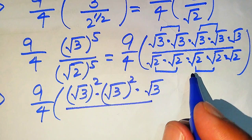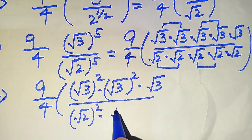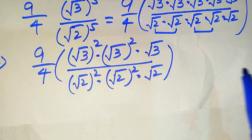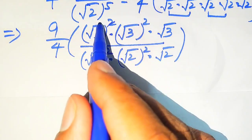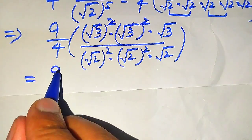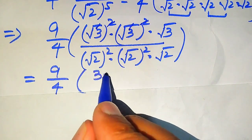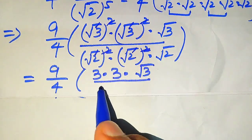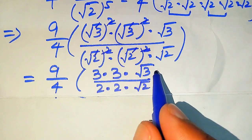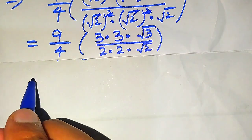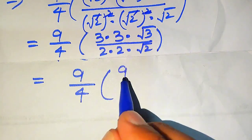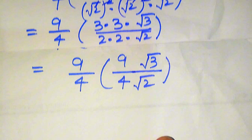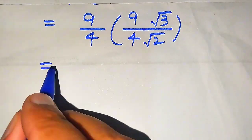Following the same pattern we write the denominator terms as (√2)² × (√2)² × √2. After that, the square and square root cancel: each (√3)² becomes 3 and each (√2)² becomes 2. We get 9 over 4 into (3 × 3 × √3) divided by (2 × 2 × √2). Multiplying, 3 times 3 becomes 9 and 2 times 2 becomes 4. So we have 9 over 4 into (9√3) divided by (4√2). Now we need further simplification.